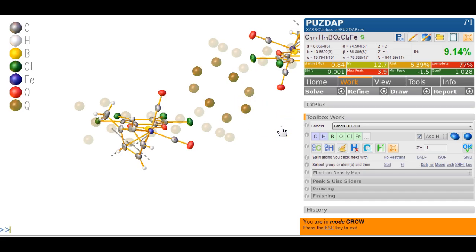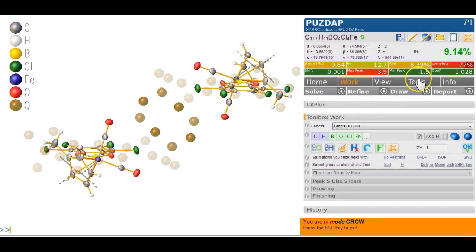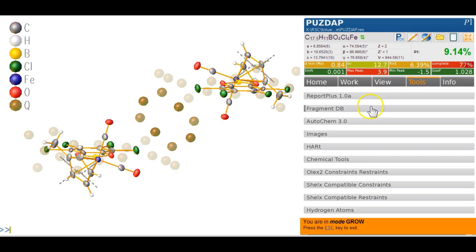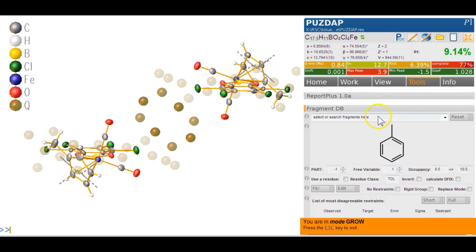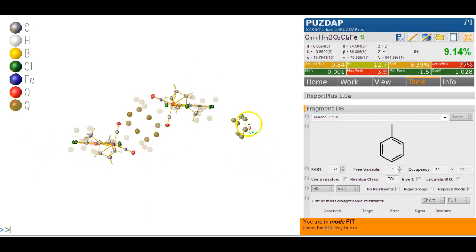How do we model this in Olex2? Well, the idea is to possibly use the fragment db tool and what we do, we type toluene and there it comes and we set it to part minus one because it's across the symmetry element and we set the occupancy to 0.5. Once we've done that, we go fit and that inserts that toluene here.